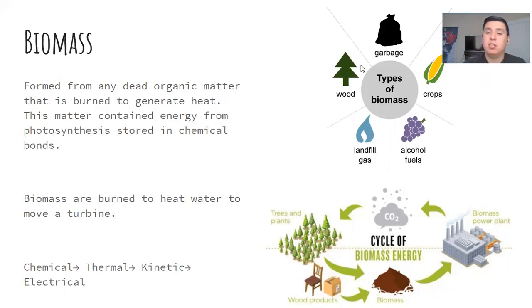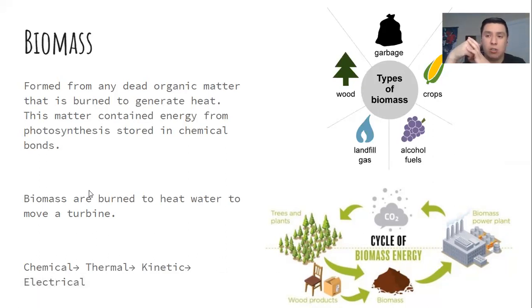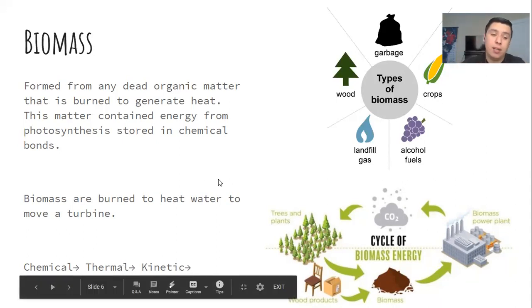When we refer to biomass, we refer to materials that are just barely decomposed. Examples include garbage, wood, gas, alcohol fuels, and crops—things that are already dead that you can burn to make fuel. It's the same as natural gas and coal: burned to heat water, produce steam, and move a turbine. This cycle shows the entire process. Trees and plants turn into wood and cardboard, then become decomposed and thrown away as biomass. We take the biomass to a power plant and burn it, producing CO2. The energy converts from chemical energy stored from photosynthesis, to thermal energy from heating, to kinetic energy from the turbine movement, then to electrical energy.